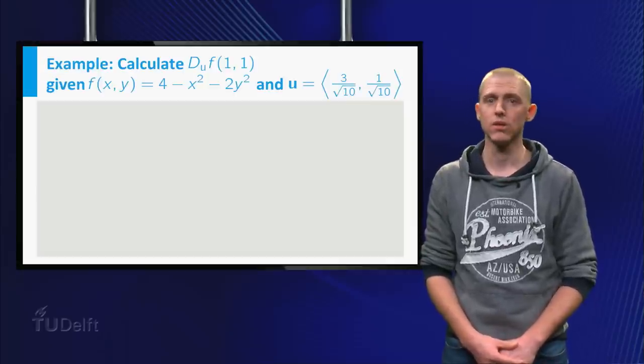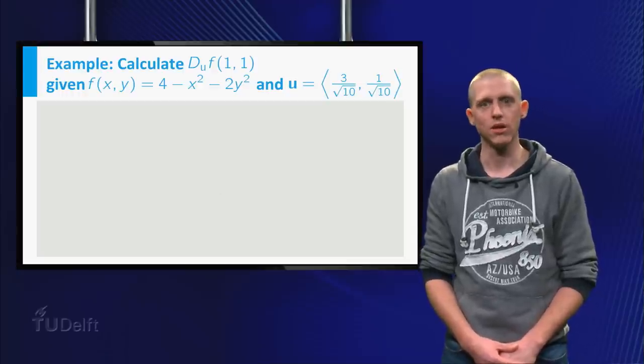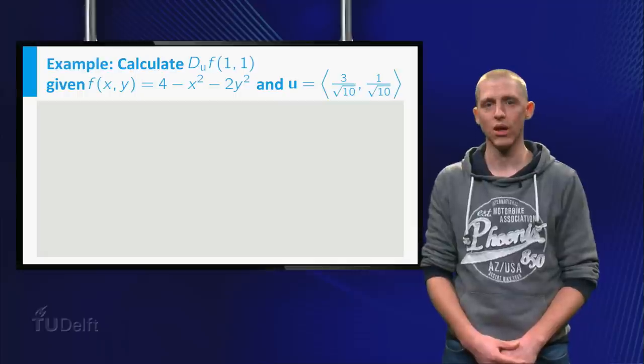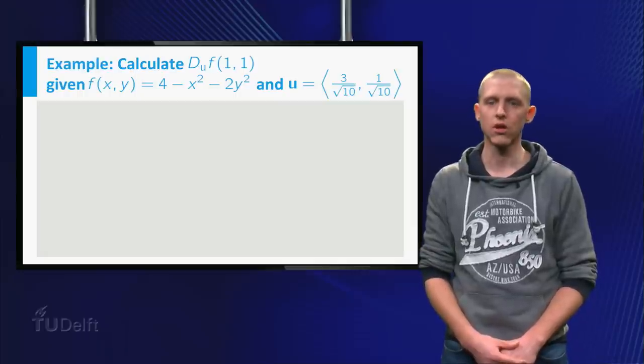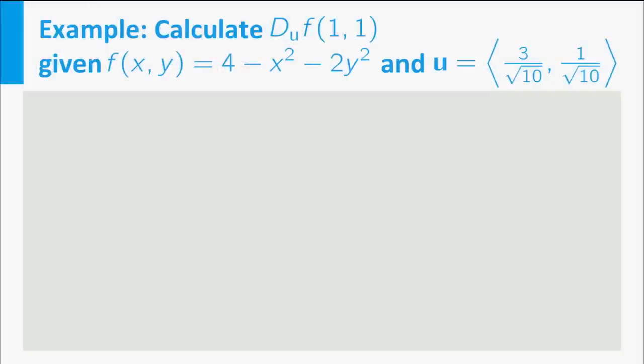Let's calculate the directional derivative at f of x of y is equal to f minus x squared minus 2y squared in the direction u given by 3 over square root 10, 1 over square root 10. Notice that u is a unit vector.